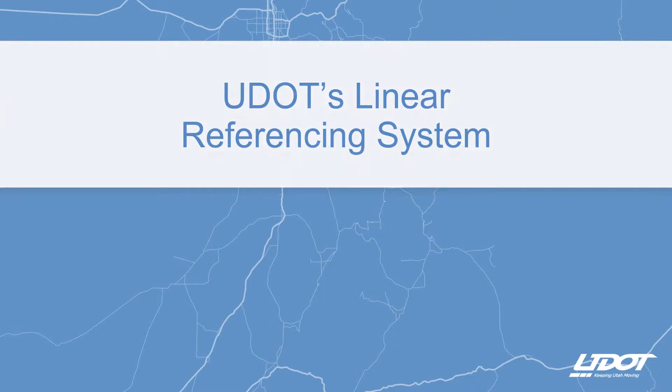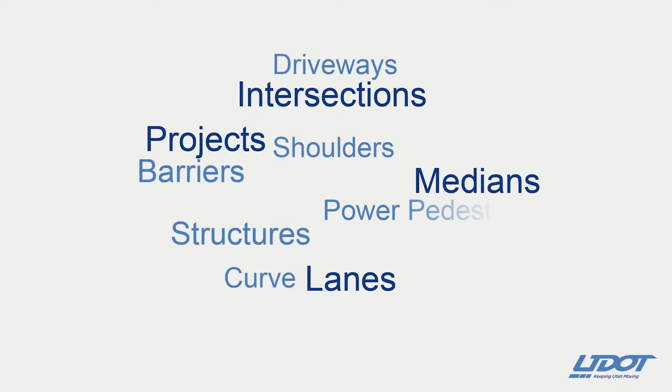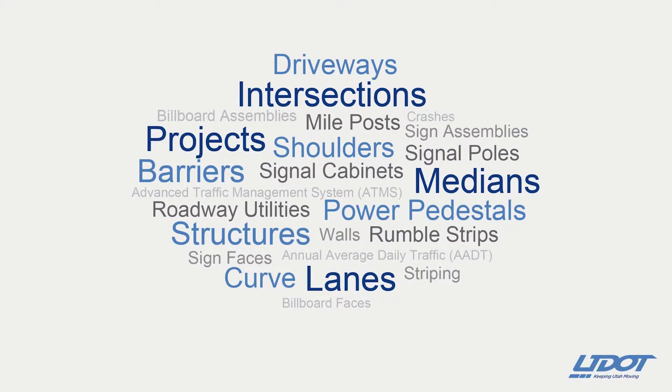You can use the LRS to pinpoint the mileage location of things like intersections, lanes, and medians, or the annual average daily traffic and crash rates for any stretch of road.